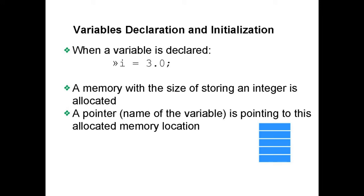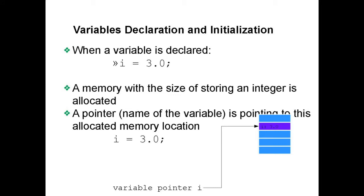Let's look in detail at the variable declaration and initialization process inside a computer. There exist many memory slots that your program can use for various purposes. When you execute a line of code for variable declaration and initialization — such as I = 3.0 — a memory slot large enough to store your variable will be allocated to your program, and then the value 3.0 will be stored in that memory location.